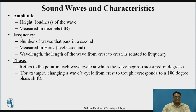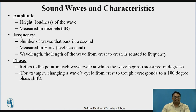The second characteristic is frequency — the number of waves that pass in one second is called frequency, and is measured in hertz. Wavelength is the length of the wave from crest to crest. Phase basically refers to where the wave cycle begins, and is measured in degrees. For example, changing a wave cycle from crest to trough corresponds to a 180-degree phase shift.